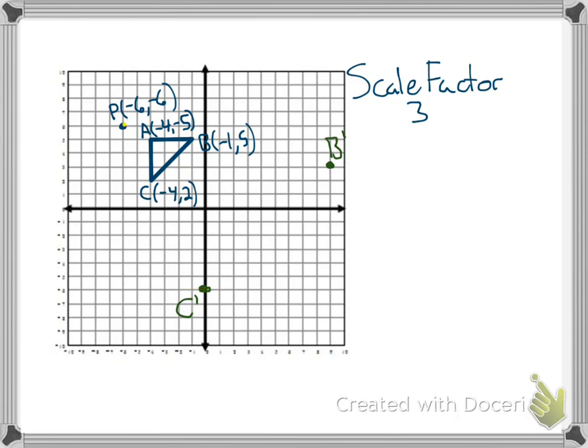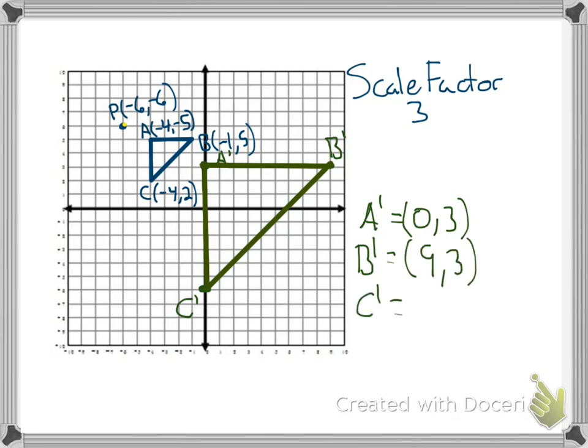Last one we have is A. If I go from P to A, I went down 1 over 2. Down 1 over 2, down 1 over 2, down 1 over 2. I get my new point here, and that's going to be A prime. We can draw in our sides. I have A prime to C prime, C prime to B prime, and A prime to B prime. I can write my new points. A prime is going to be (0, 3). B prime looks like (9, 3). And C prime is (0, -6).